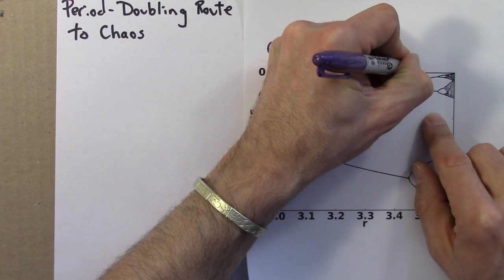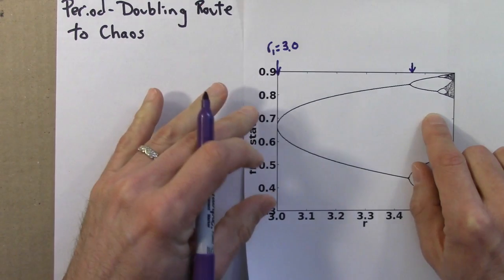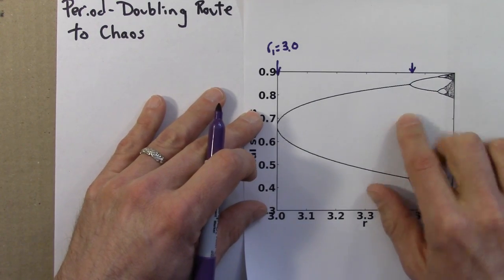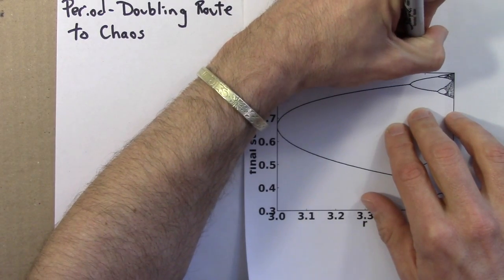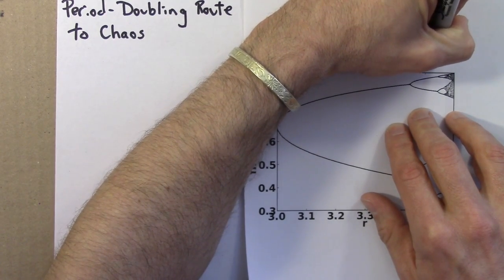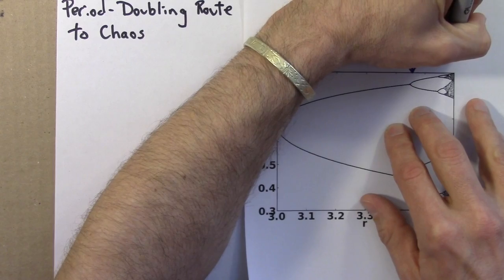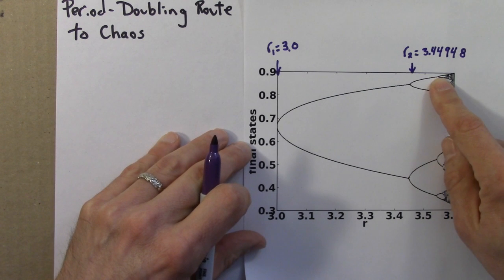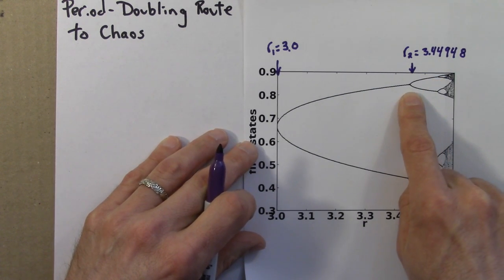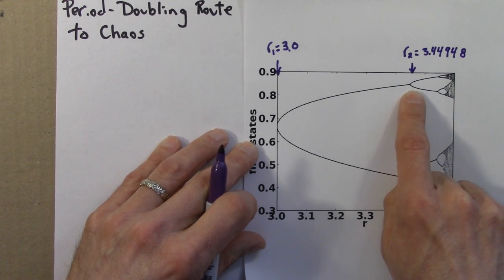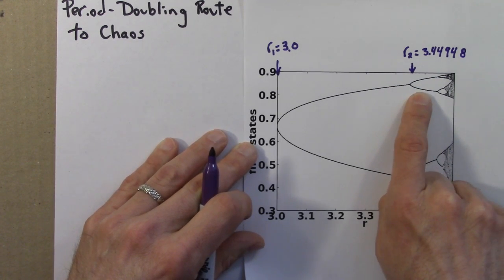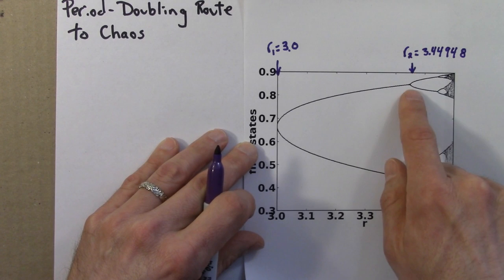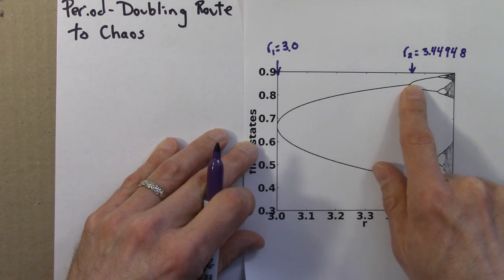Then there's a transition that occurs here. This is transition from period 2 to period 4. And it turns out that this occurs at R is about 3.44948. So I figured that out by zooming in on the bifurcation diagram, looking more and more closely around this point, and trying to get as accurate a value for where this line splits into 2 as possible. This was one of the intermediate problems from last unit's homework.